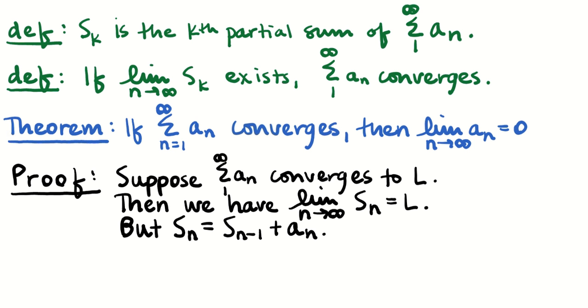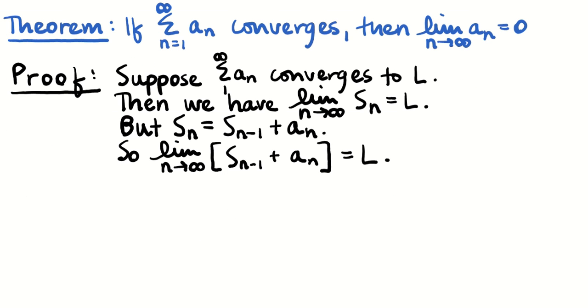But we can say that the nth partial sum is equal to the previous partial sum plus the next term. That's how we get to the next partial sum, by adding one more term. Which now means that I can substitute for S_n right here with this value, and it'll still be equal to L.